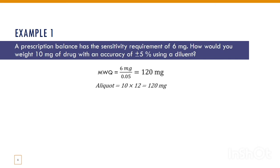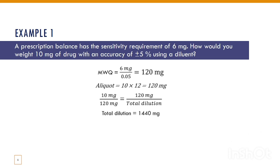The aliquot is calculated by multiplying the amount of drug needed, which is 10 mg, by 12 to get 120 mg. For total dilution: 10 mg divided by 120 mg equals 120 mg divided by total dilution. By rearranging the whole equation, the total dilution is equal to 1440 mg.